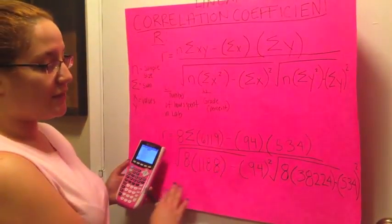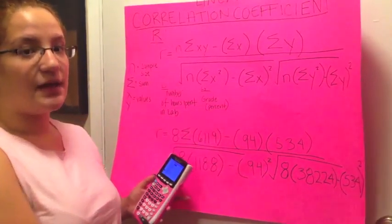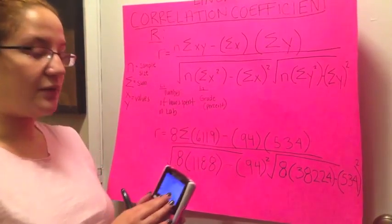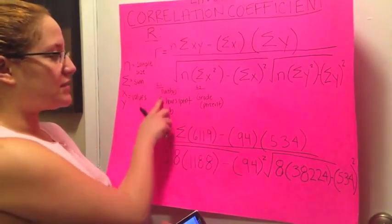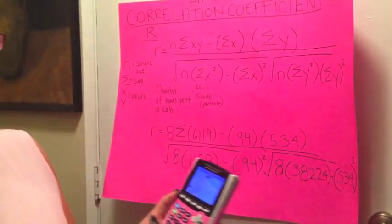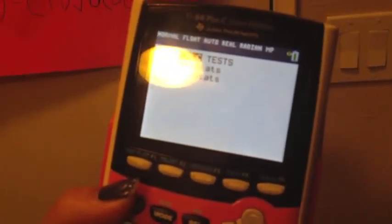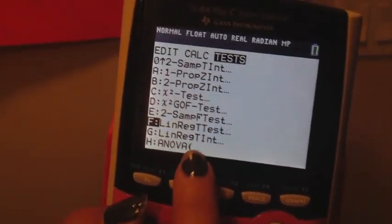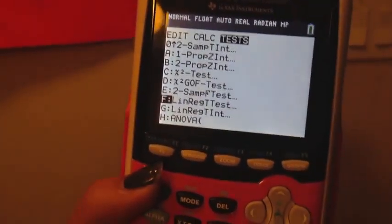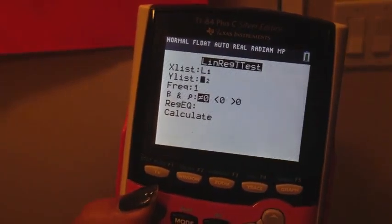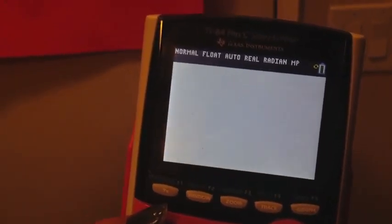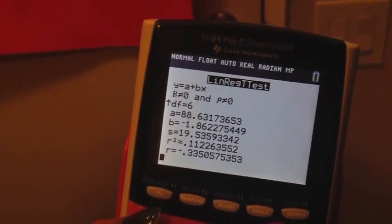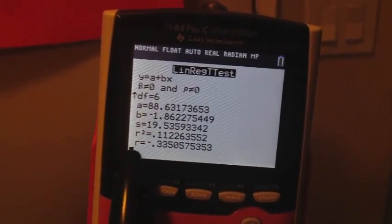After you do this and you get the calculations by hand, if you want to check it, the calculator will actually do the entire problem for you. So you just put in list 1 and list 2, and then you're going to go to stat, move over to test, and you're going to go on linear regression t-test. And you just press enter, make sure your lists are there, and calculate. And the entire answer is given to you, it's going to be the r.